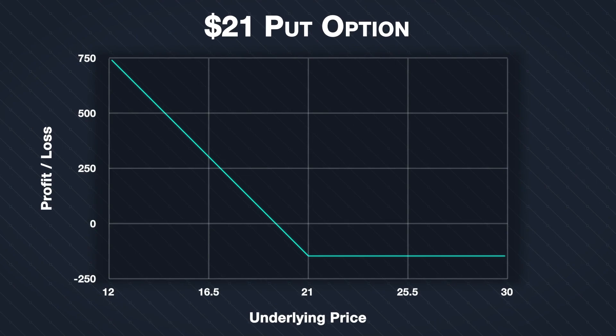As you can see, for this put option at expiration, the risk is fixed to $1.54 if the price of SLV is anywhere above $21. The profit then increases continuously for any SLV price below $21. Let's look at some specific examples.